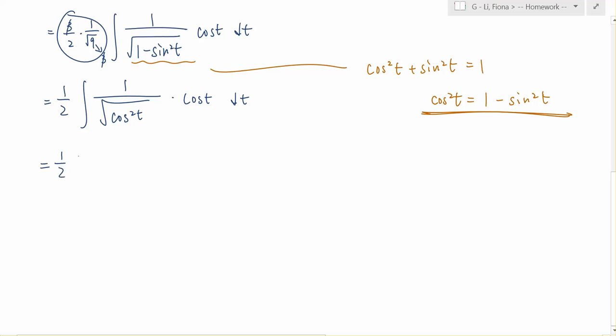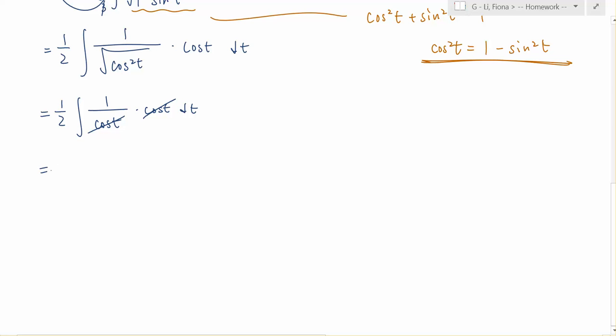So let's further simplify this, and we will get 1 over the square root of cosine squared t, which will be cosine t, simply cosine t times cosine t dt. And so if we eliminate these two cosine t, we will get 1 half times the integral of 1 dt.